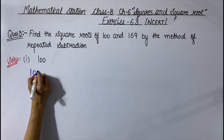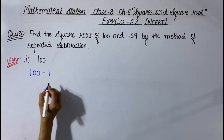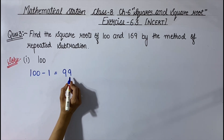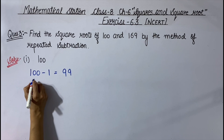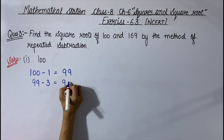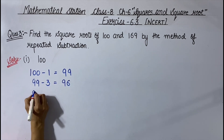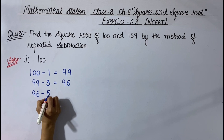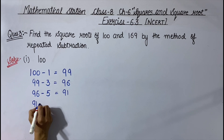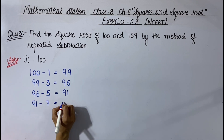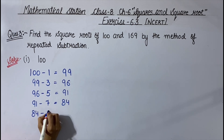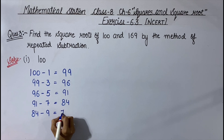First, 100 minus 1 equals 99. Then from 99 we subtract the next odd number, 3. 99 minus 3 equals 96. After that, from 96 we subtract the next odd number 5. 96 minus 5 equals 91. Then from 91 we subtract the next odd number 7. 91 minus 7 equals 84. Then from 84 we subtract the next odd number 9. 84 minus 9 is 75.